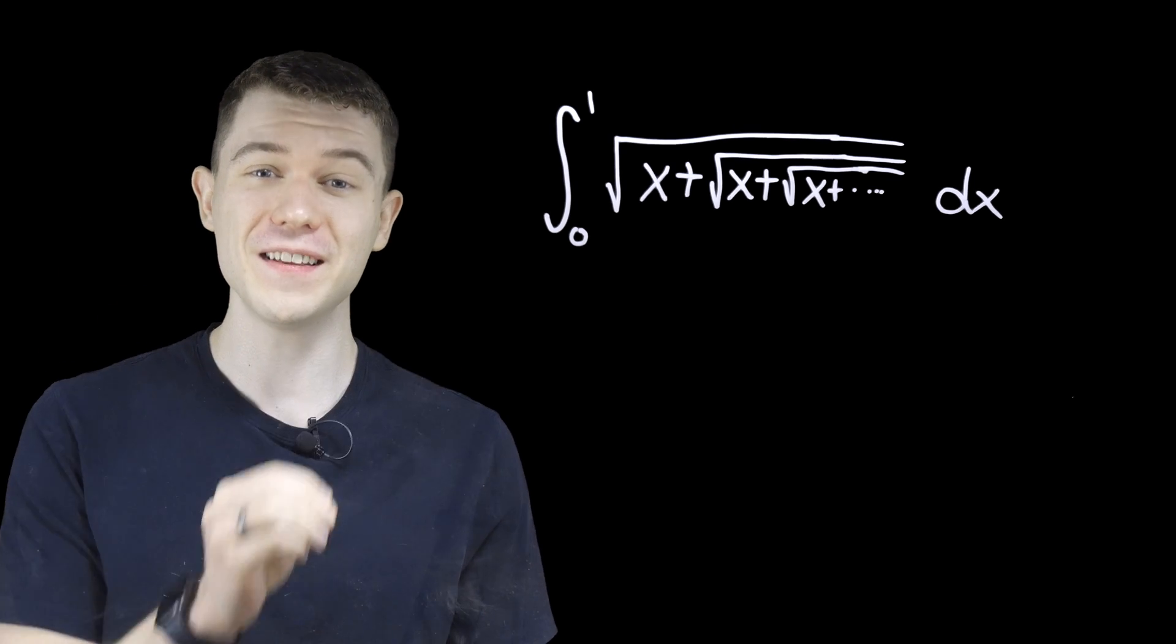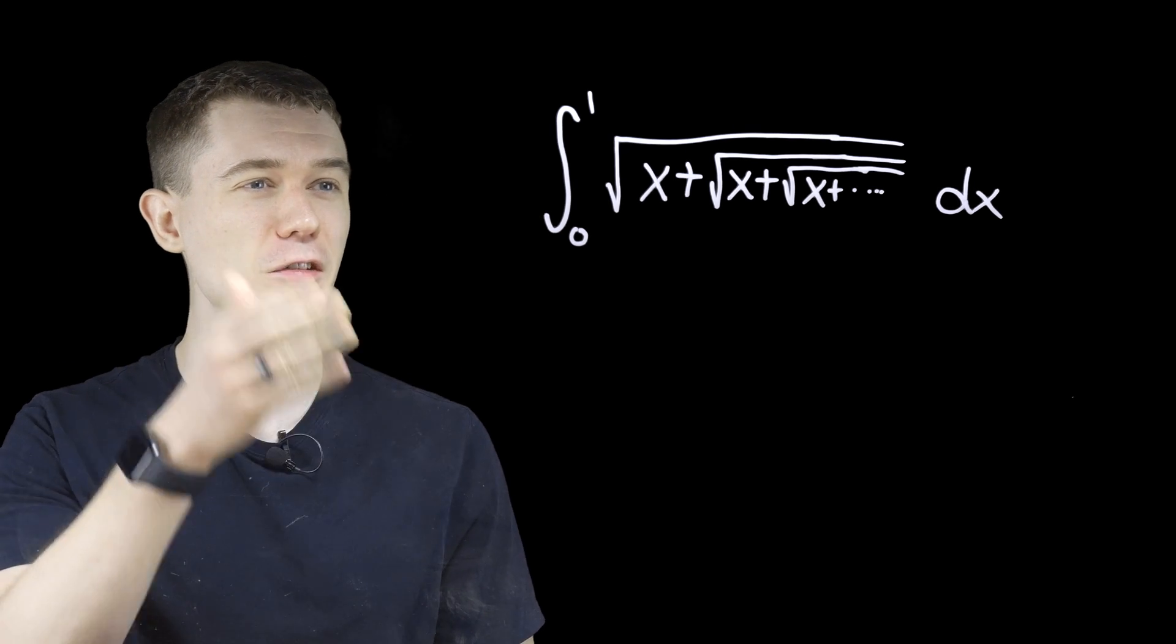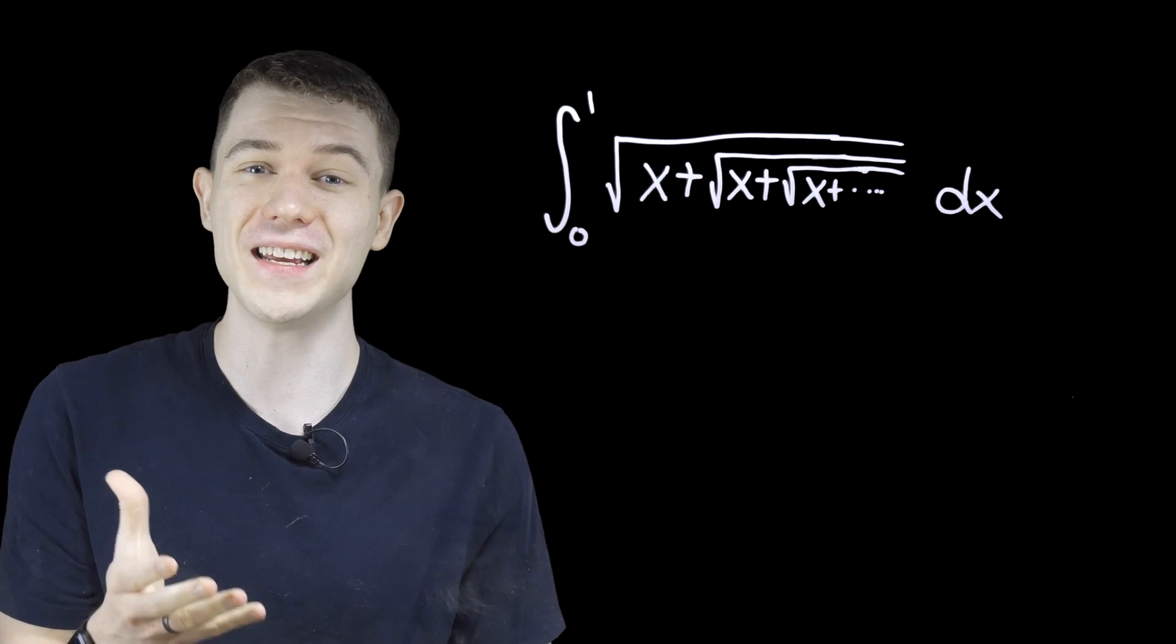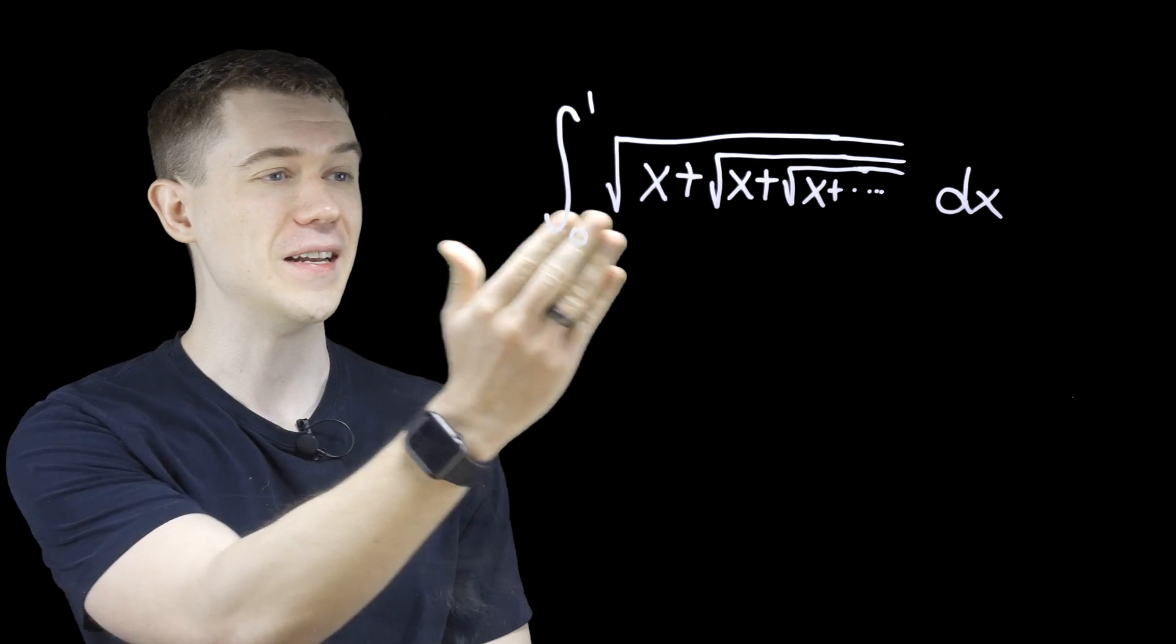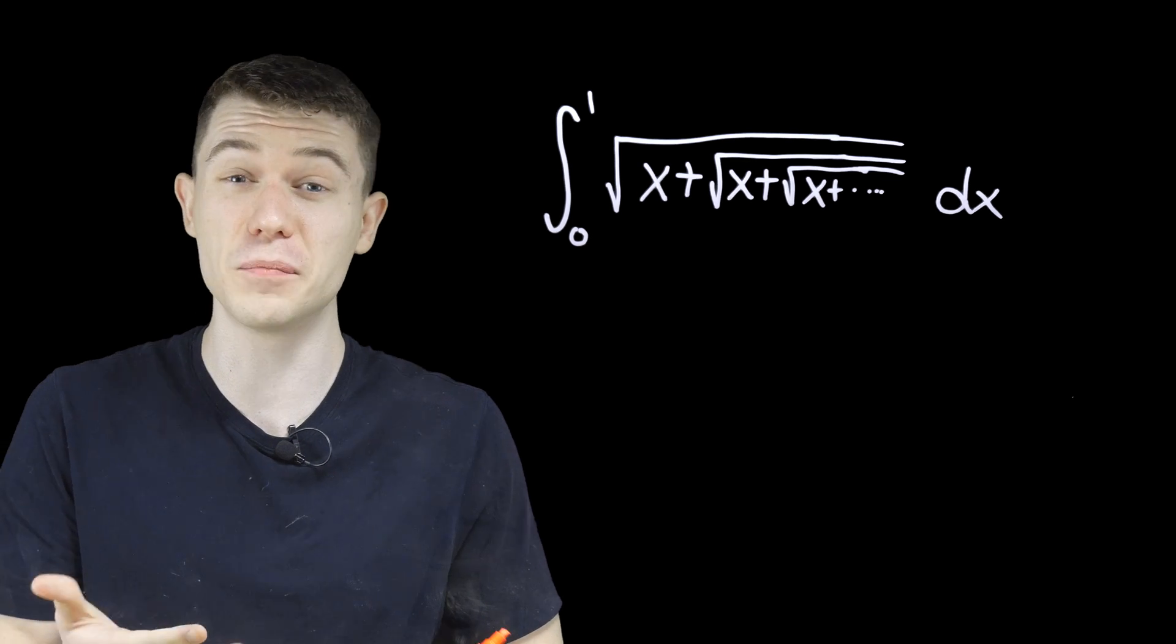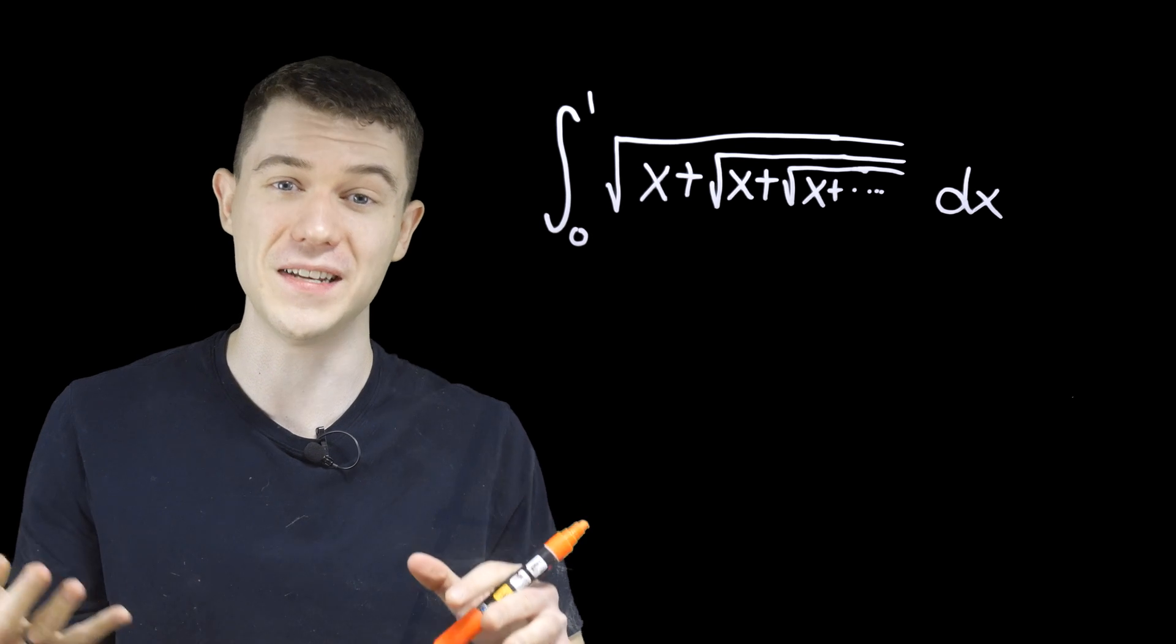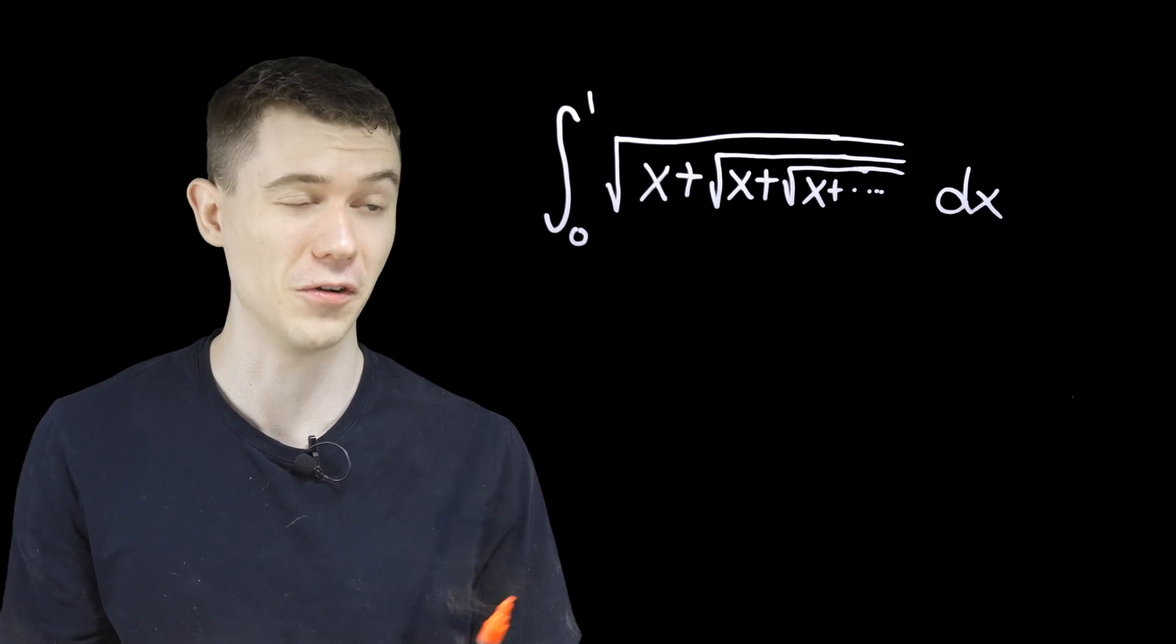We're going to solve this infinitely nested integral, the definite integral from 0 to 1 of square root of x plus square root of x plus square root of x, and it keeps going on nested inside this. This is a pretty gnarly thing to work with, and it certainly doesn't follow any of the natural integration techniques you would learn in calculus.